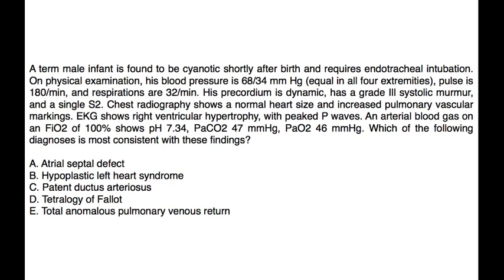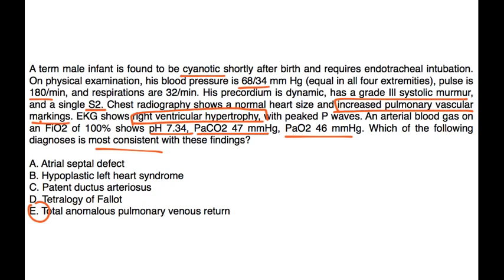Next vignette: a term male infant is found cyanotic shortly after birth and requires endotracheal intubation. Blood pressure is 68/34, pulse is 180, respirations are 32. His precordium is dynamic. He has a grade 3 systolic murmur and a single S2. Chest X-ray shows normal heart size with increased pulmonary vascular markings. EKG shows right ventricular hypertrophy with peaked P waves. ABG on FiO2 of 100% shows pH 7.34, PaCO2 47, and PaO2 46. The EKG finding, chest X-ray finding, and cyanosis all point to TAPVR — choice E is the correct answer.